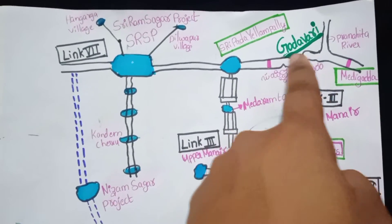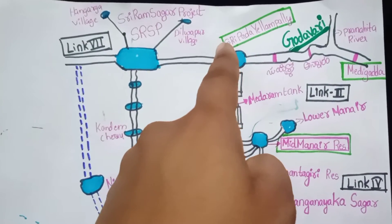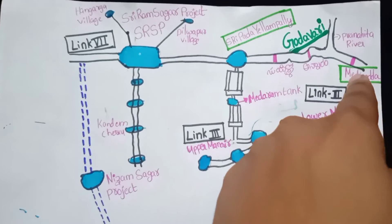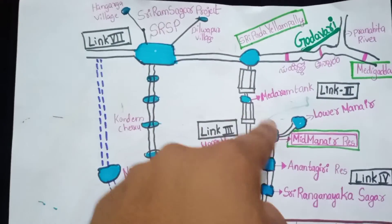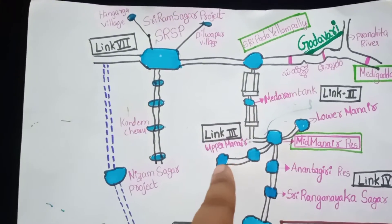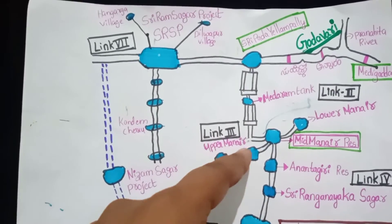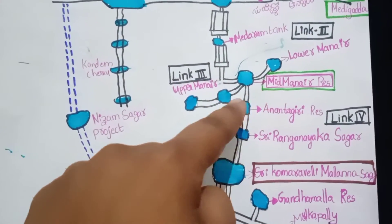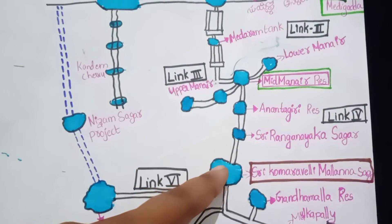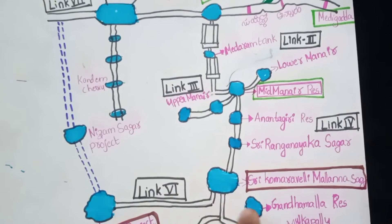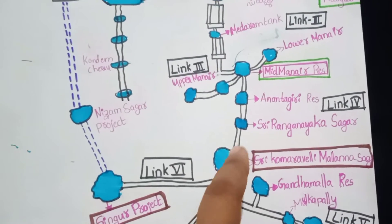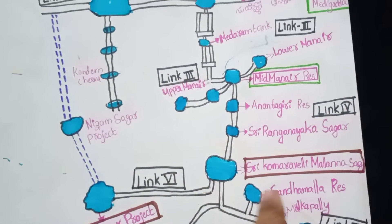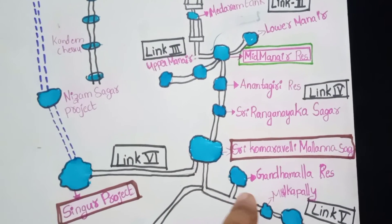The project uses barrages from SRSP and Midmaner. Link 1 and Link 2 use these same barrages. Link 3 goes from Midmaner Reservoir to Upper Midmaner Reservoir through pump houses. Link 4 goes from Midmaner Reservoir to Kondopochamma Reservoir. Link 5 goes from Midmaner Reservoir to Upper Midmaner Reservoir.